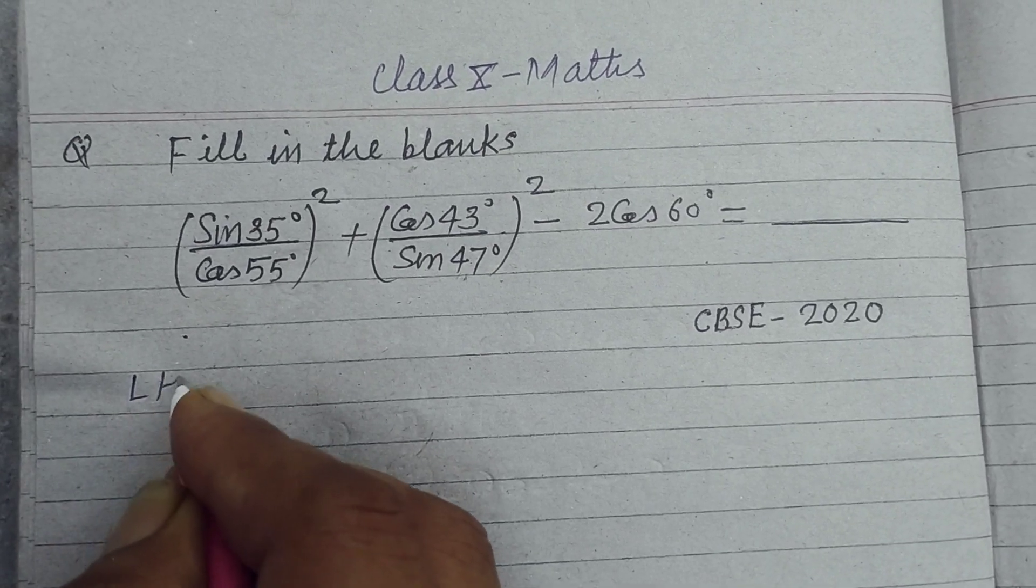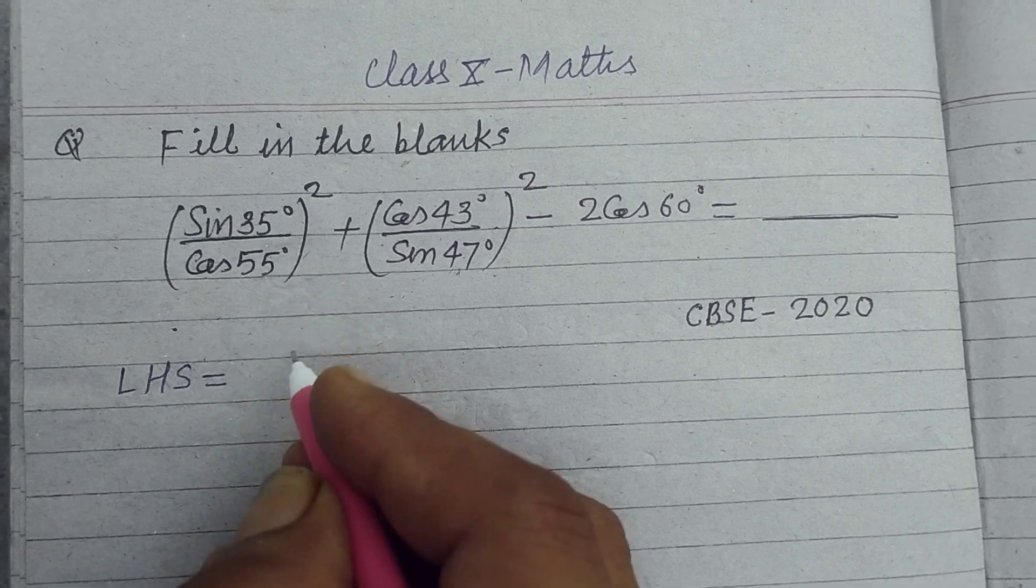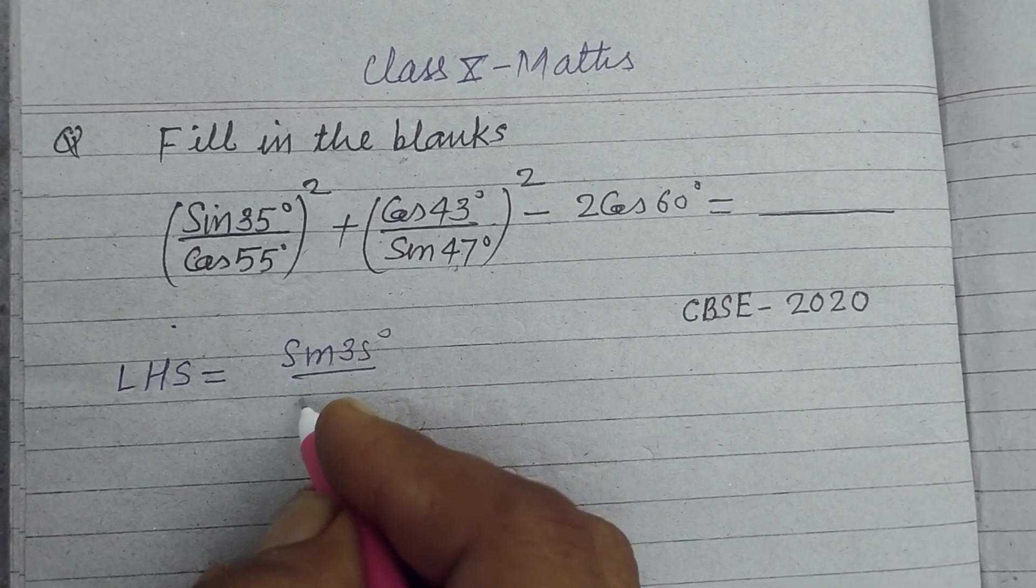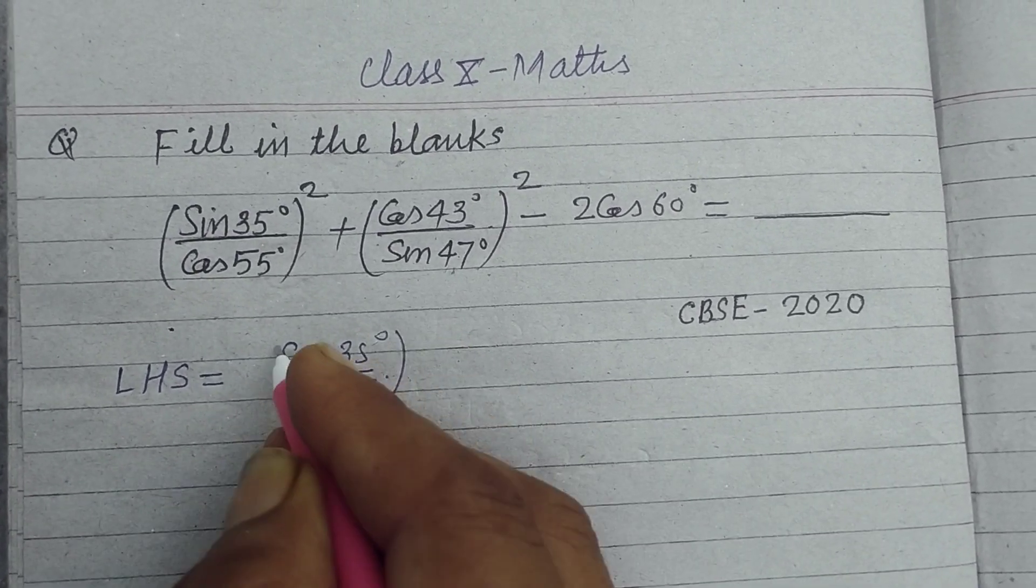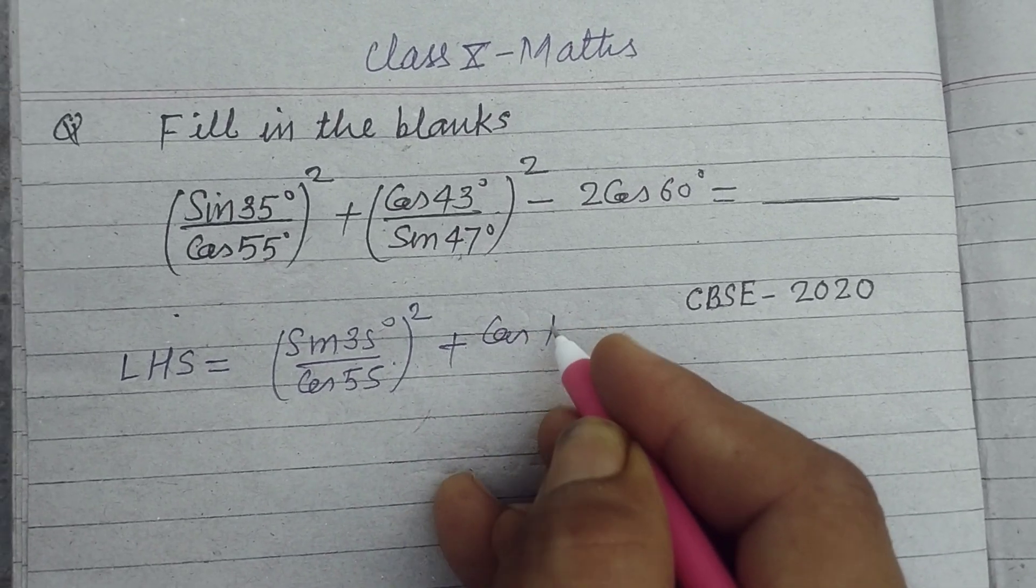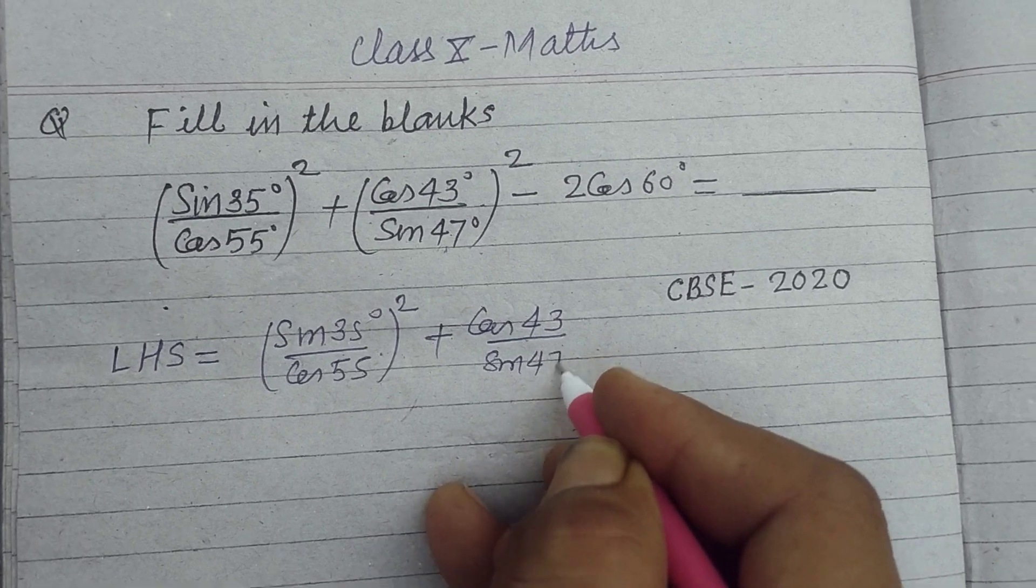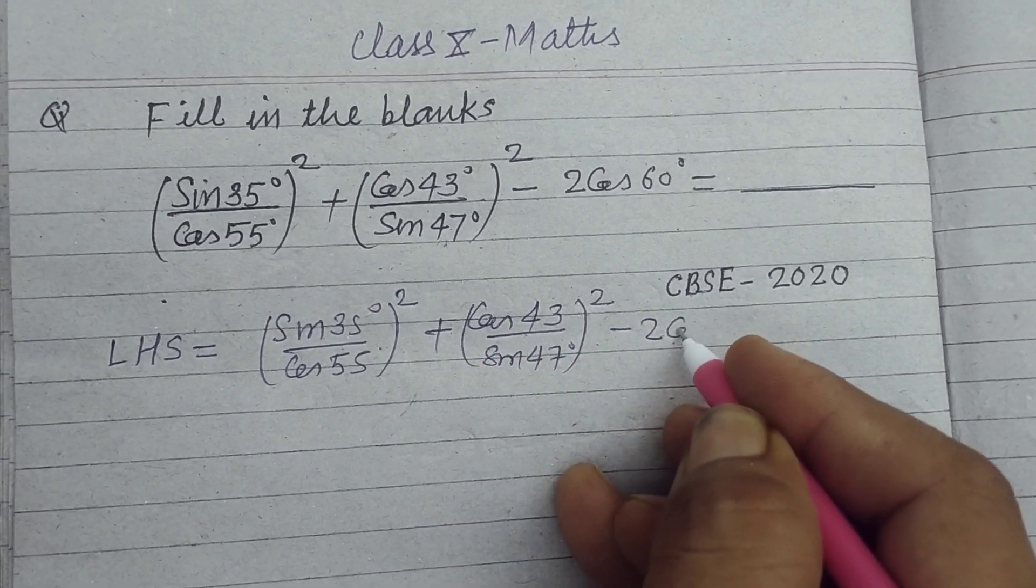So students, here we take (sin 35° / cos 55°)² + (cos 43° / sin 47°)² minus 2 cos 60°.